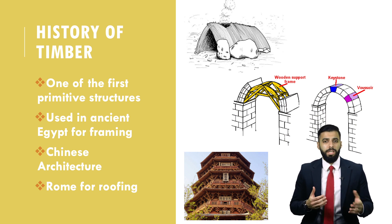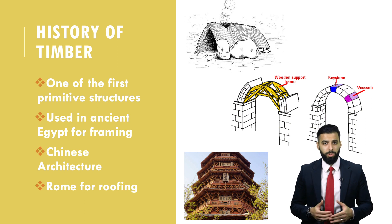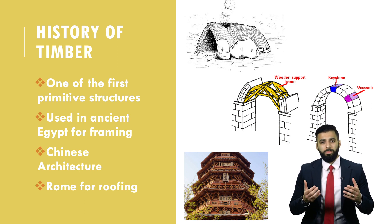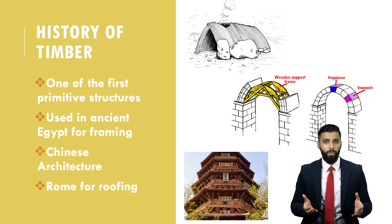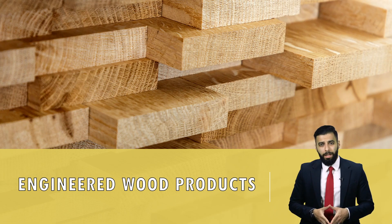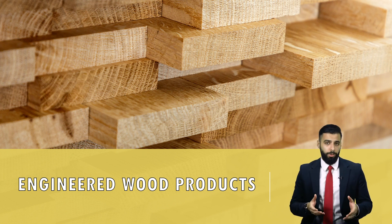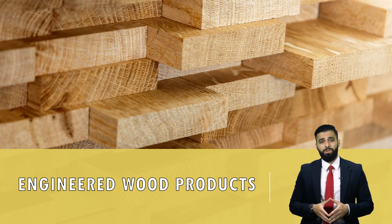In the 1990s, cross laminated timber was introduced. CLT is a multi-layered timber product that enabled the construction of floor panels and walls that can sustain huge loads. In the next part of the video we will be looking at some of the engineered wood products that are presently used in the construction industry and how they are manufactured.